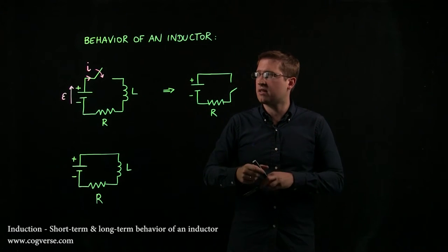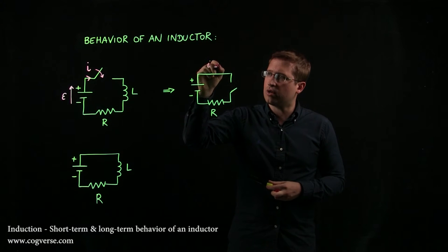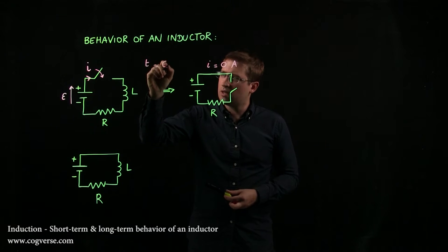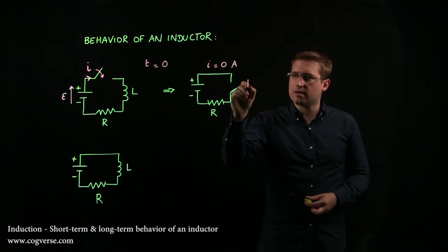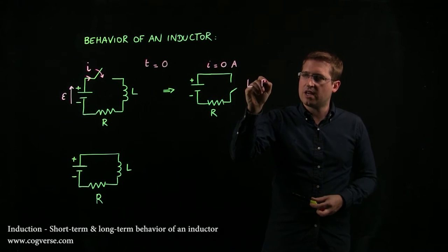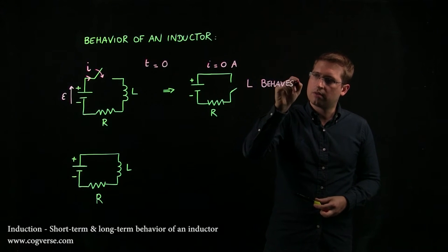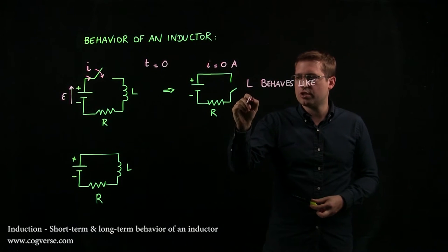And of course, if that's the case, then there is no current flowing through the circuit. Now this is at t equals zero, and the inductor L behaves like an open switch.